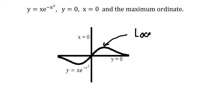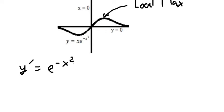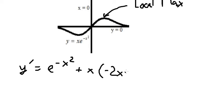To find the local maximum of this point, we need to find the first derivative of y. The first derivative of x gives us 1, so we have e to the power of negative x squared. Then the first derivative of e to the power of negative x squared gives us negative 2x, because the first derivative of negative x squared equals negative 2x, multiplied by e to the power of negative x squared. This is the product rule of derivative.